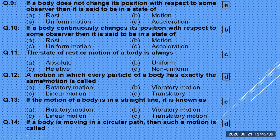A motion in which every particle of a body has exactly the same motion is called translatory motion. If the motion of a body is in a straight line, it is known as linear motion — not rotatory, not vibratory.